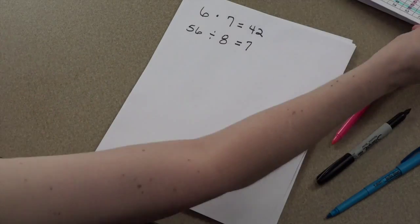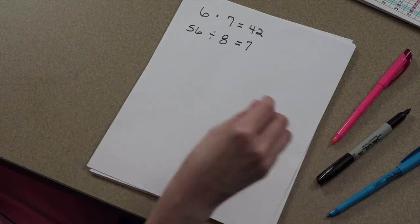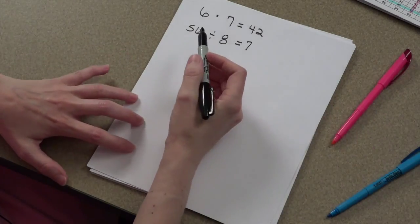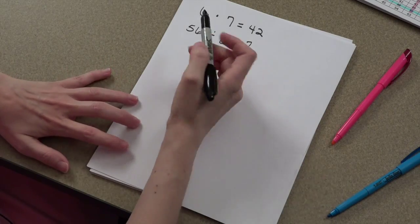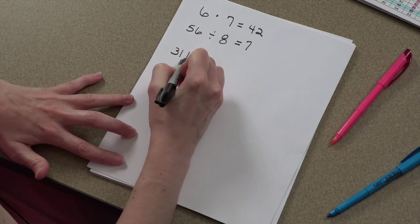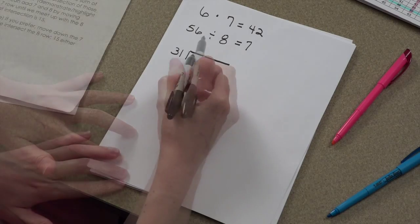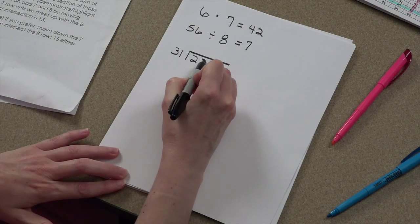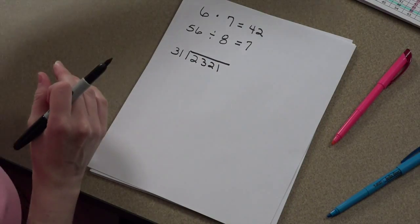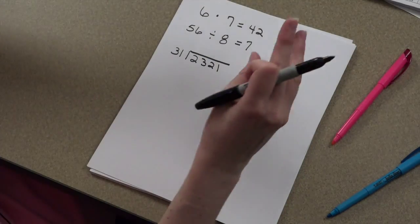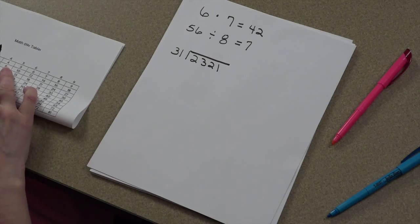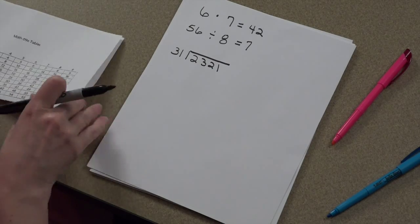Now the coolest part about your multiplication table, it can help you with big numbers too. I don't know if you knew this. Let's say you want to take this big number, 31, and you want to divide it into 2,321. Now, holy moly, that doesn't seem like you can do that very well. But you can. You can use your multiplication table to estimate. We have our multiplication table.